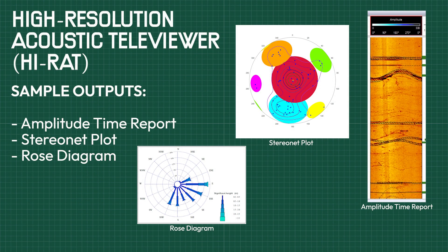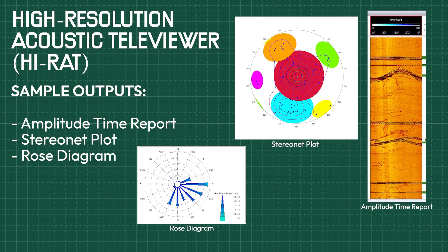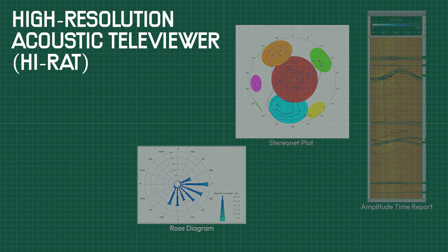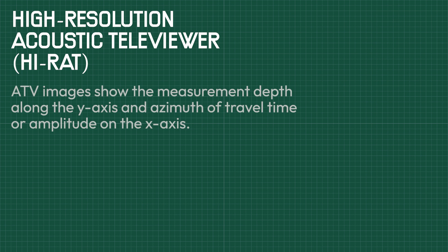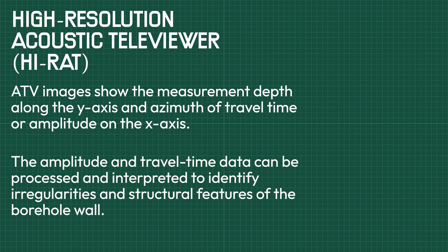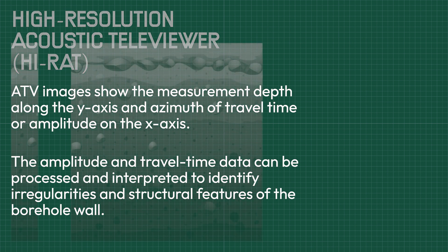Sample outputs include amplitude time report, stereo net plot, and rows diagram. ATV images show the measurement depth along the y-axis and azimuth of travel time or amplitude on the x-axis. The amplitude and travel time data can be processed and interpreted to identify irregularities and structural features of the borehole wall.